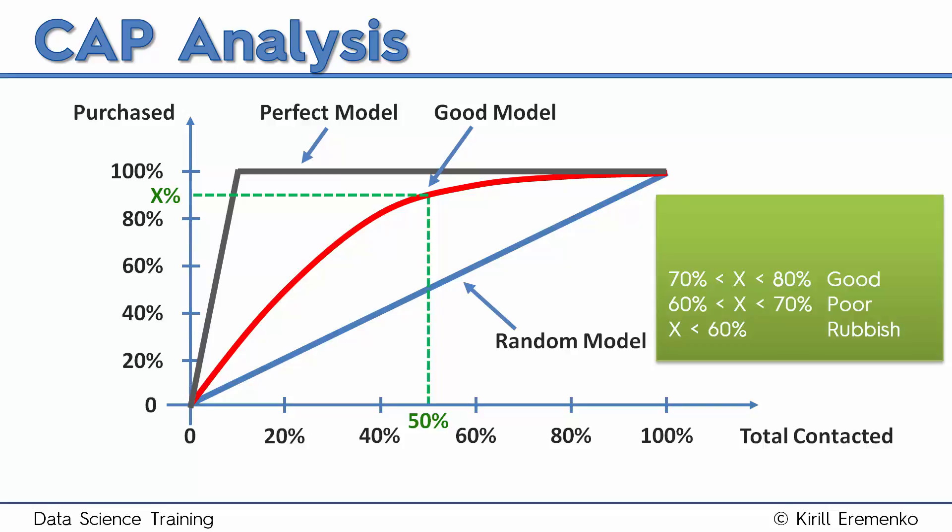If X is between 70% and 80%, that's a good model. That's already where you should be aiming for. Anything above 70% can deliver good quality insights to the business and actually deliver value. Anything between 80% and 90% like we see here is very good. It's extremely good. If you can get a model over 80%, that is an amazing result.